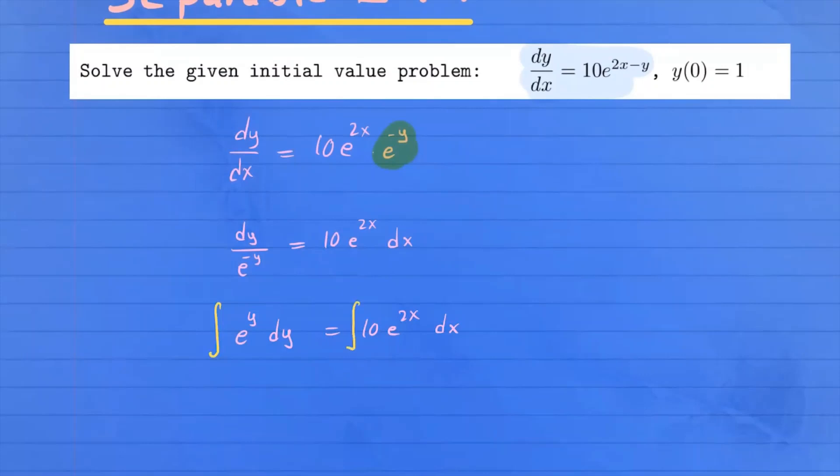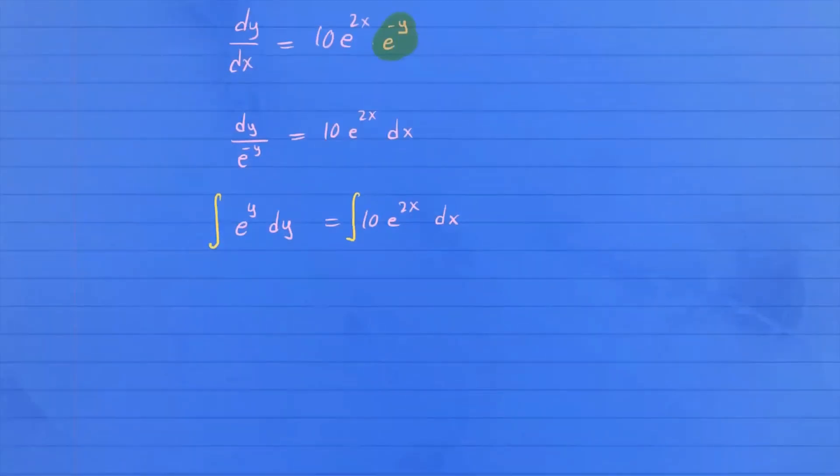Now we can integrate. Here you're going to integrate with respect to y, here with respect to x. When you integrate e^y with respect to y, that gives you e^y plus c. But hold on to plus c until the very end.